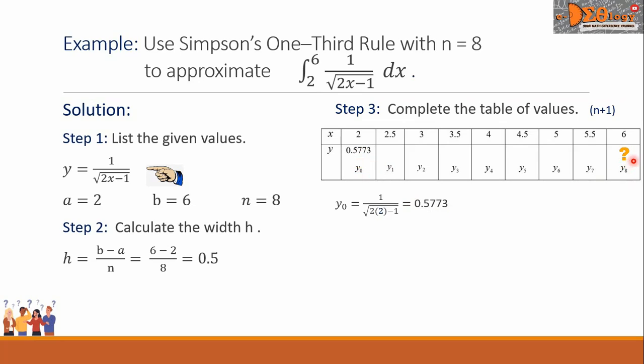For y sub n, we substitute x equals 6. Y sub n equals 1 all over the square root of 2 times 6 minus 1. Simplifying this, we get the value 0.3015.